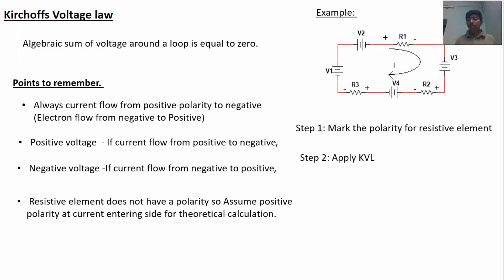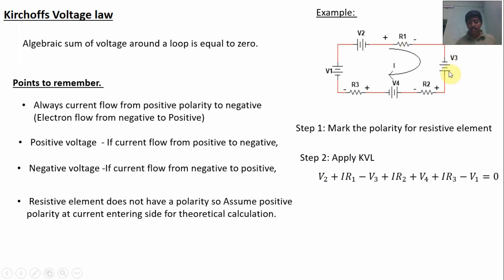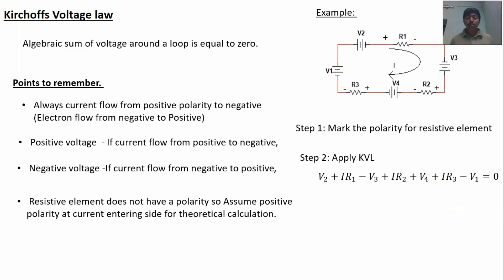Next, apply the KVL from this point. Going around the loop: in V2, current flows from plus to minus so it is positive voltage. In R1, current flows from plus to minus so positive voltage. In V3, current flows from minus to plus, so negative voltage — minus V3. In V4, current flows from positive to negative so positive voltage. In R3, current flows from positive to negative so positive voltage. In V1, current flows from negative to positive so minus voltage. The algebraic sum of voltages is equal to zero. Positive and negative signs should be written carefully. This is Kirchhoff's voltage law.